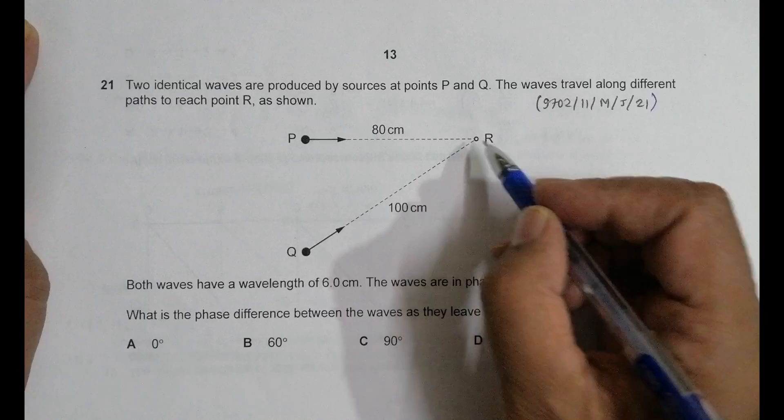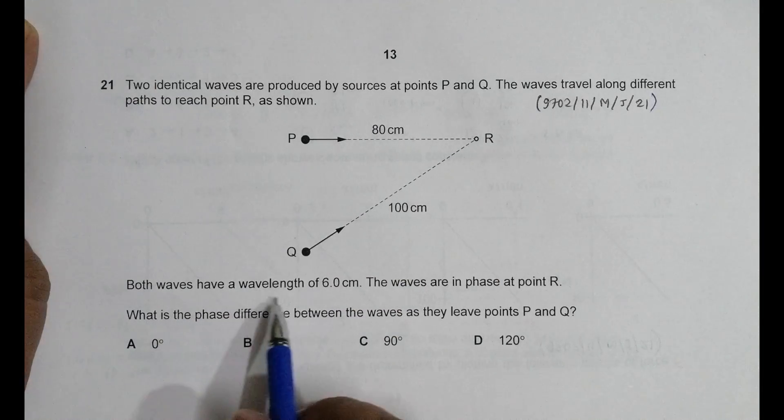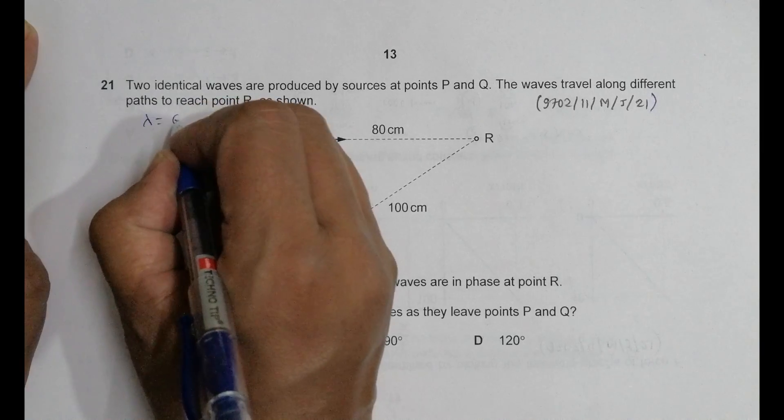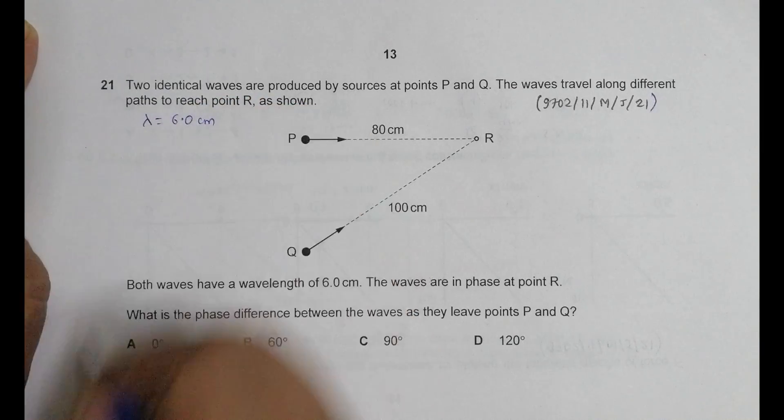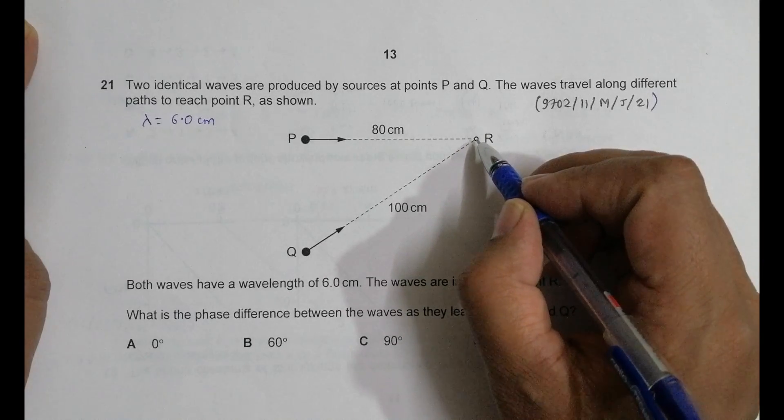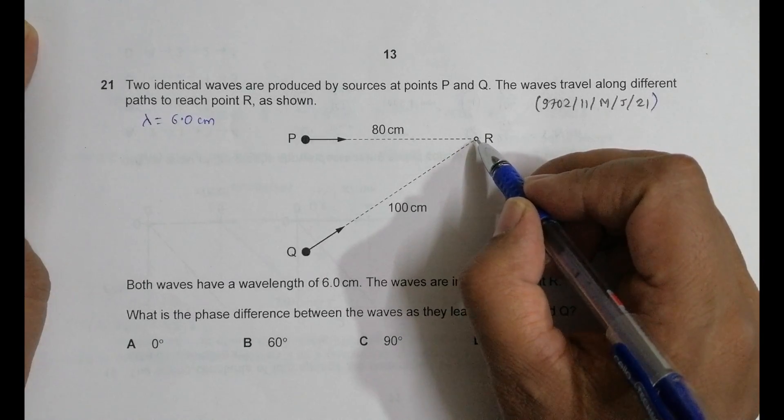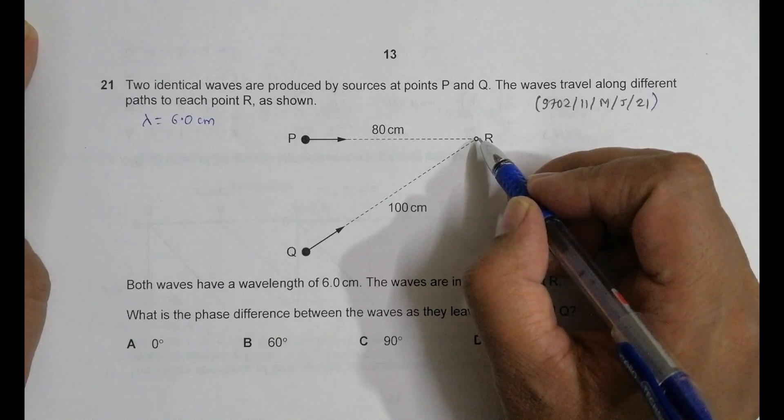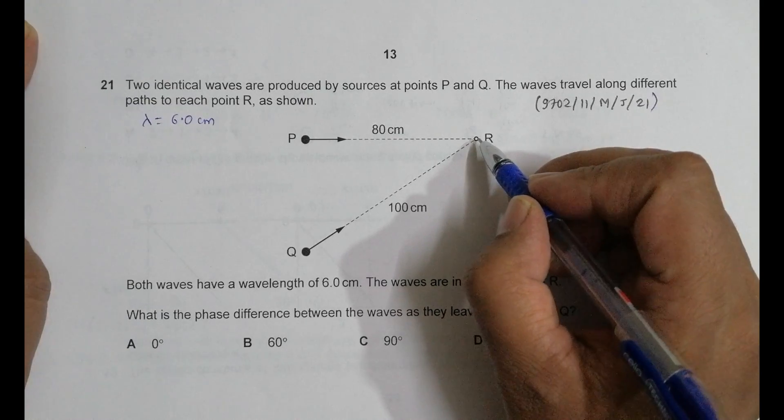So they superpose at point R. Both waves have a wavelength of 6.0 centimeters, so lambda is equal to 6.0 centimeter. The waves are in phase at point R, so that means at R they will be forming either bright region or if it is a sound wave they will be having high amplitude.